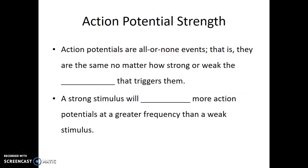Action potentials are all-or-none events. Either threshold is reached and an action potential is generated, or it's not. No matter how strong or weak the stimulus that triggers them, the action potential itself is always the same strength. You might wonder — I can feel the difference between strong and light pressure, or between a very hot and slightly warm object. The answer is that a strong stimulus simply triggers more action potentials at a greater frequency than a weak stimulus. The intensity you feel is the number of action potentials in a given length of time, not how strong those action potentials are.